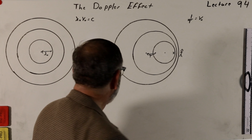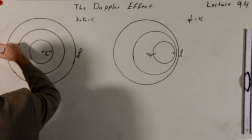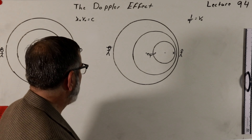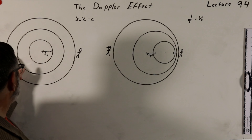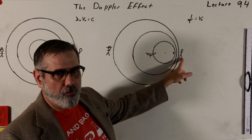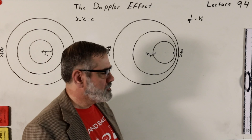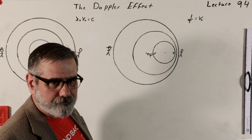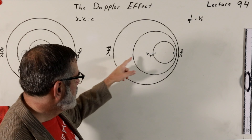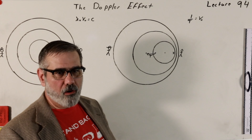You can see geometrically, just by drawing these pictures, that the wavelength is going to appear shorter to this receiver. Whereas if there was a receiver at the back, you can see the wavelength is getting longer. If the source is moving, the receiver in front sees a shorter wavelength and consequently a higher frequency. The receiver at the back — for which the source is receding — is going to see longer wavelengths and smaller frequencies.